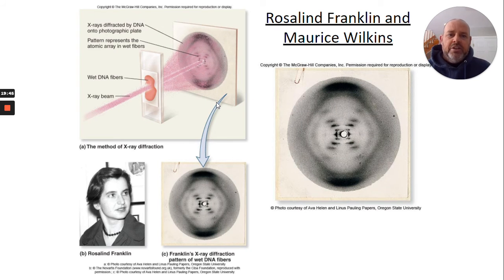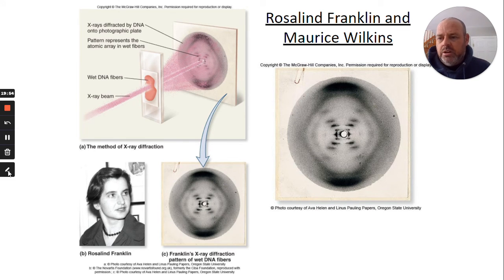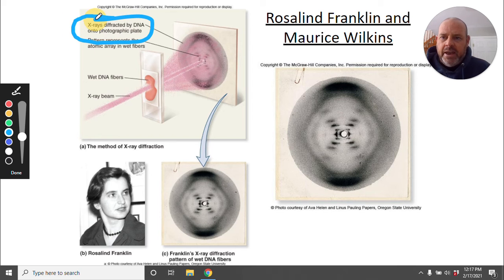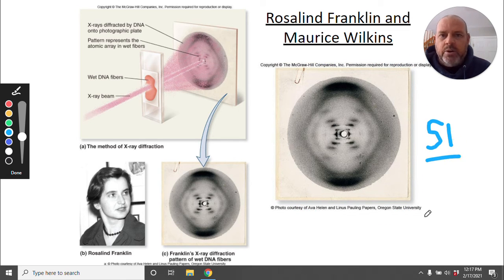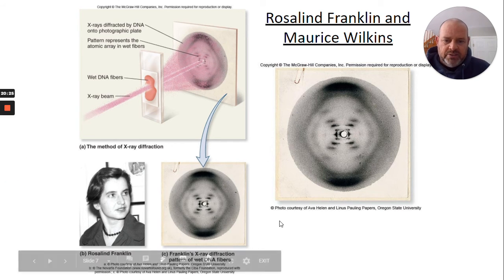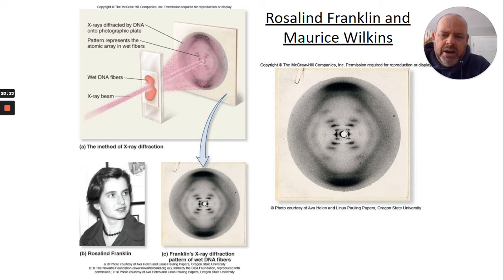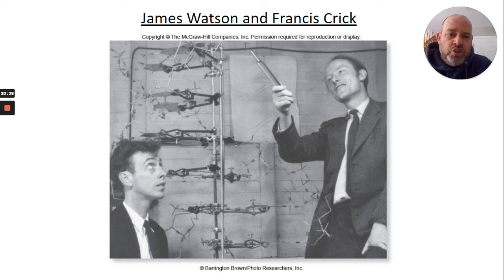Now we get to Rosalind Franklin and Maurice Wilkins. Rosalind was one of the only women in the field and was really skilled at a technique called X-ray diffraction. An X-ray is shot at wet DNA fibers on a slide, and the image gets projected onto a photographic plate. This produced a very famous photo called Photo 51. She and Maurice Wilkins were kind of forced together by their lab manager and both worked in England trying to figure out the structure of DNA.